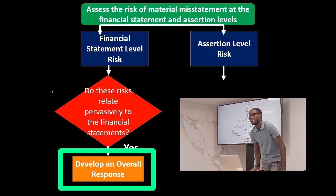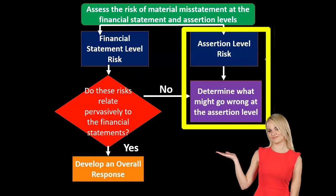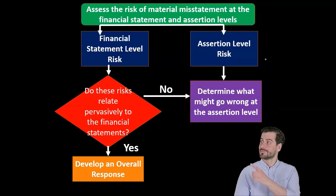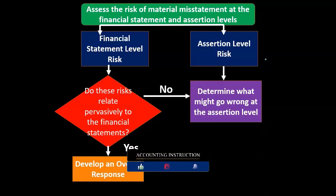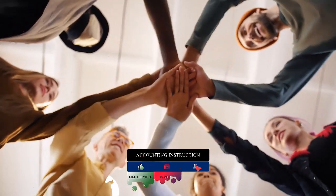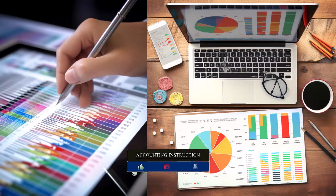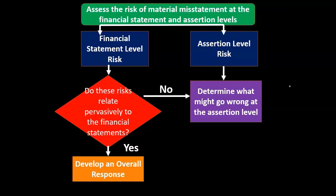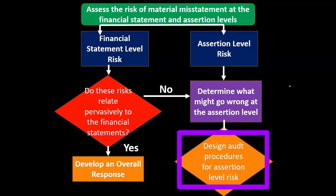So do these risks relate pervasively to the financial statements? If yes, we develop an overall response at the financial statement level. If the answer is no, then we want to consider this at the assertion risk level — the more granular level. Even if a risk won't have a material impact at the financial statement level, we still want to consider whether it has an impact on the assertion level — the individual assertions by management. We want to test those specific assertions, and we set a tolerable misstatement threshold per assertion. We then determine what might go wrong at the assertion level and design audit procedures accordingly.